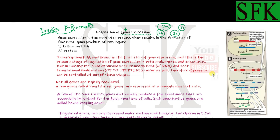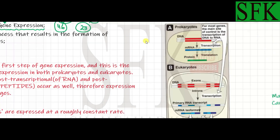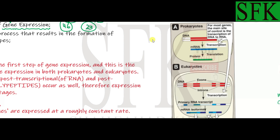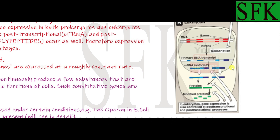There is a chart from Lippincott's Illustrated Reviews of Biochemistry comparing the regulation of gene expression in prokaryotes and eukaryotes. In prokaryotes, regulation is mainly controlled at the transcription level. In eukaryotes, regulation is also controlled at the transcription level, but since eukaryotes are more complex and advanced, they also have post-transcriptional modifications of mRNA and post-translational modifications of the protein.